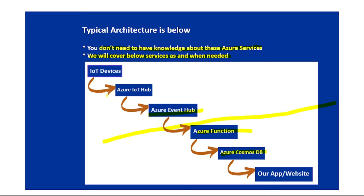Let's understand this architecture with an example of IoT fire panel devices. These devices are fitted in buildings or malls, and when fire or smoke is detected, they send notifications to our mobile app. The first component is the IoT device — fire panel sensors that can detect fire or smoke. When fire or smoke is detected, that information is sent to Azure IoT Hub.